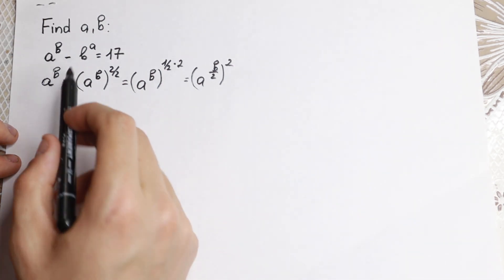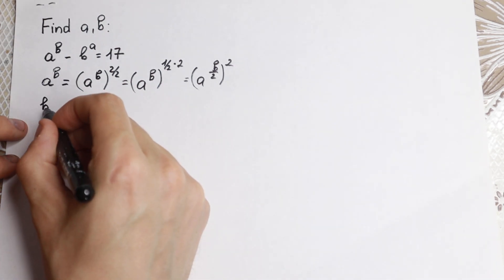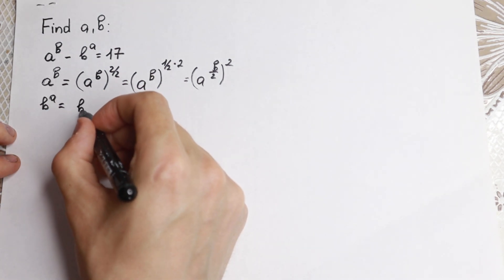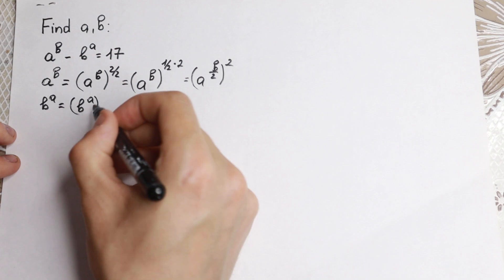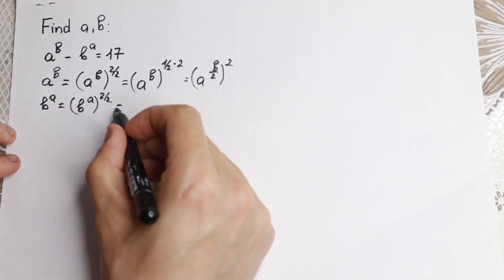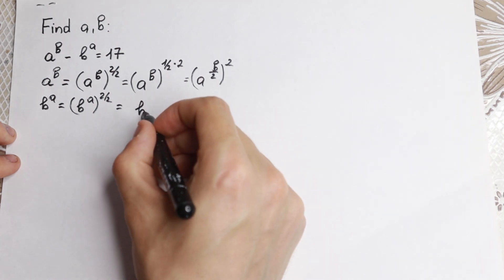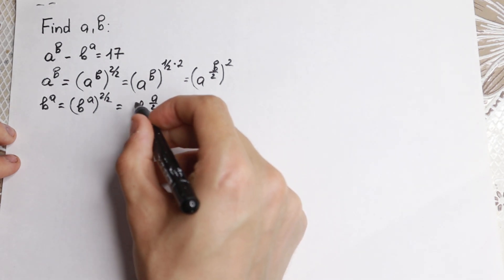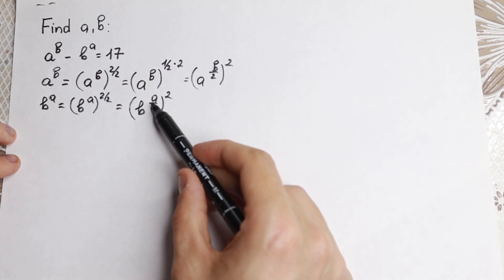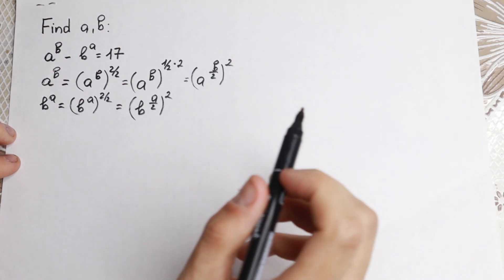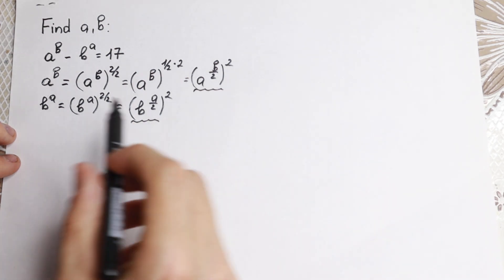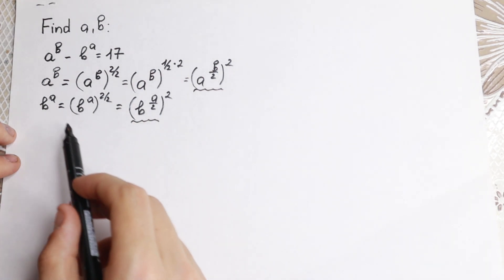Let's do the same thing with b to the power a. We write b to the power a raised to the power 2 over 2 — nothing changed. Using the same trick, we get b to the power a over 2, all squared. Expanding it gives us b to the power a, all the same. We're going to use these rewritten elements going forward.